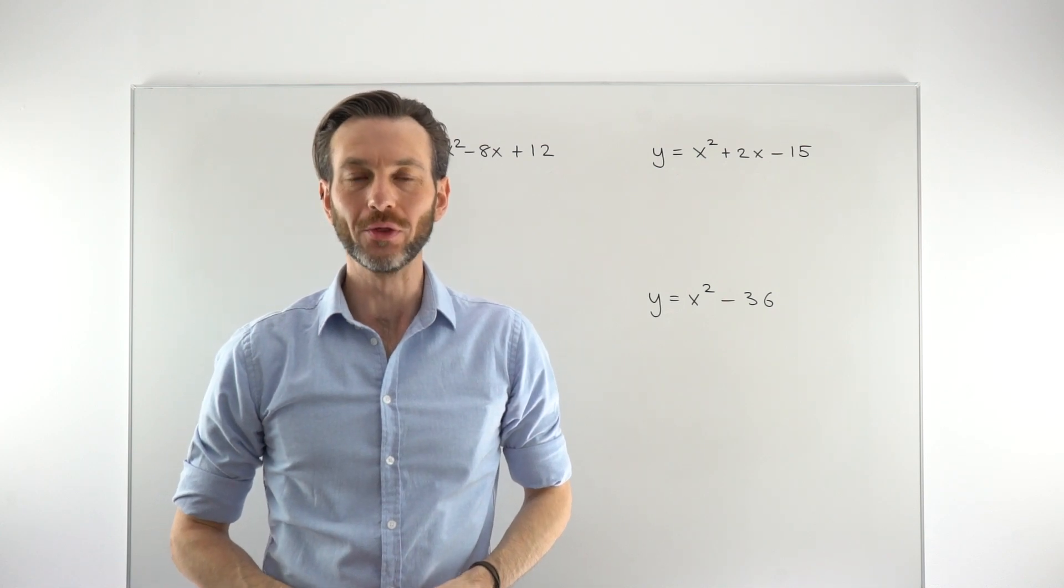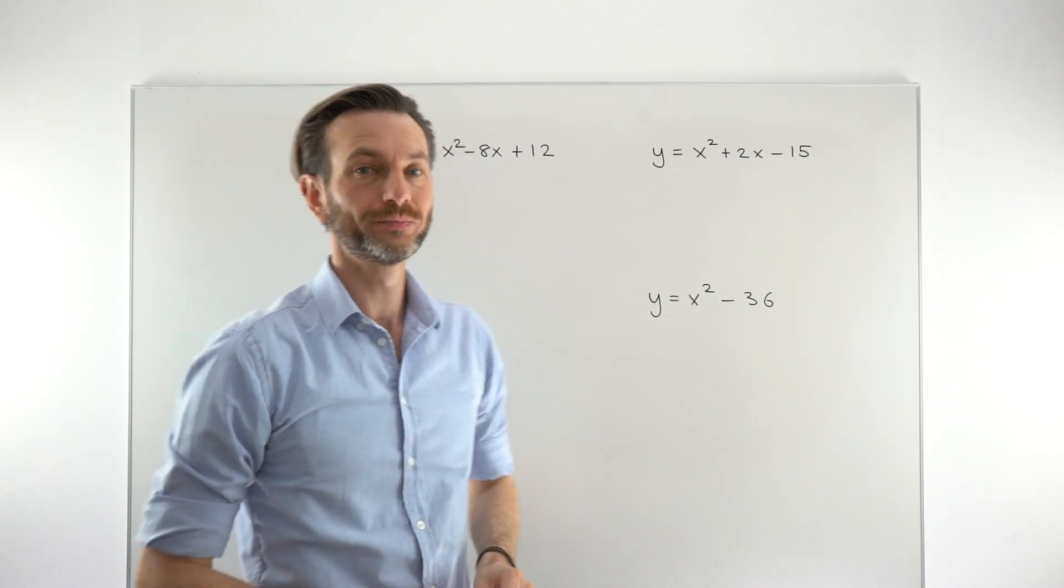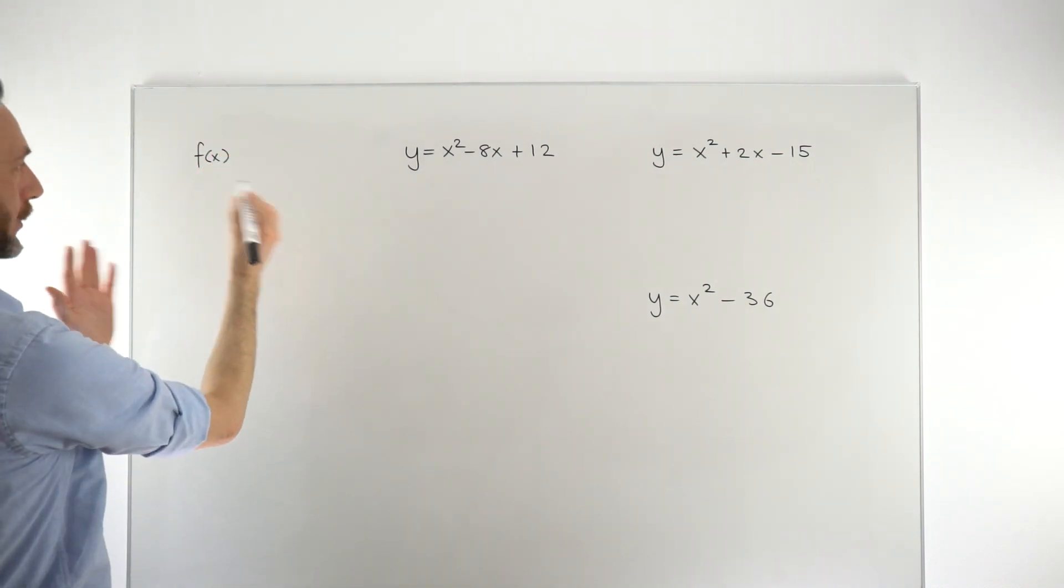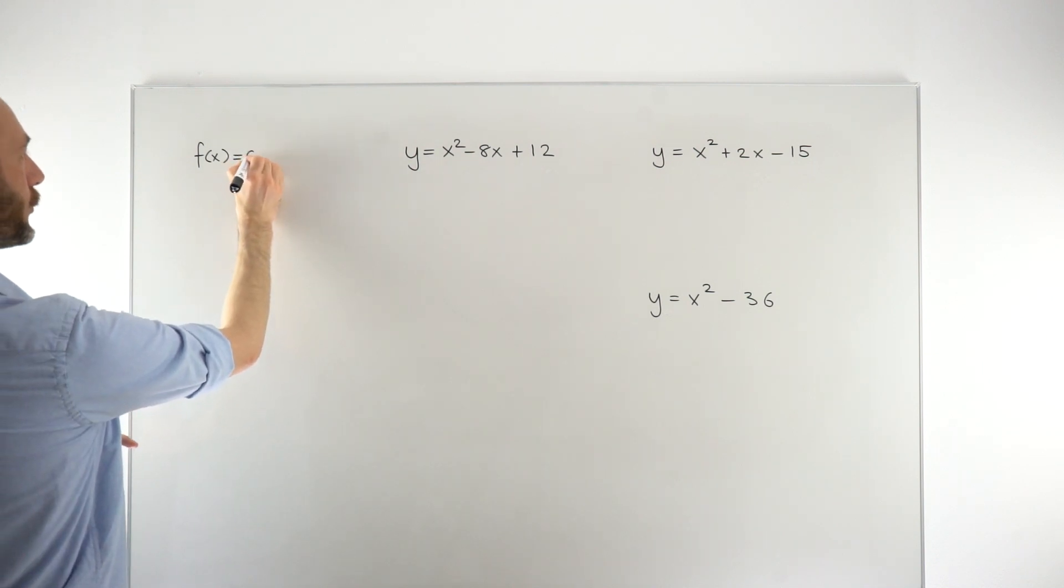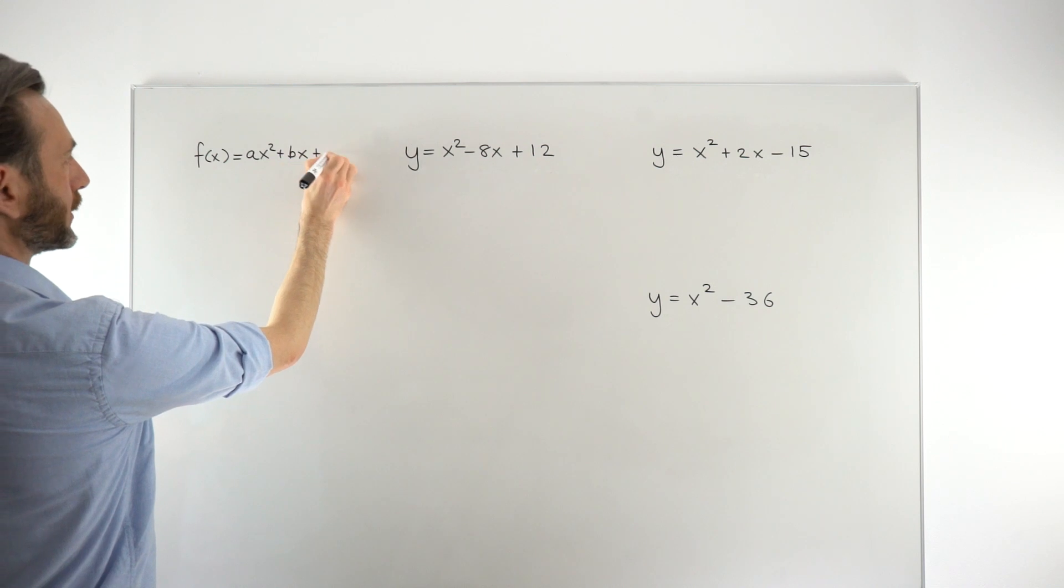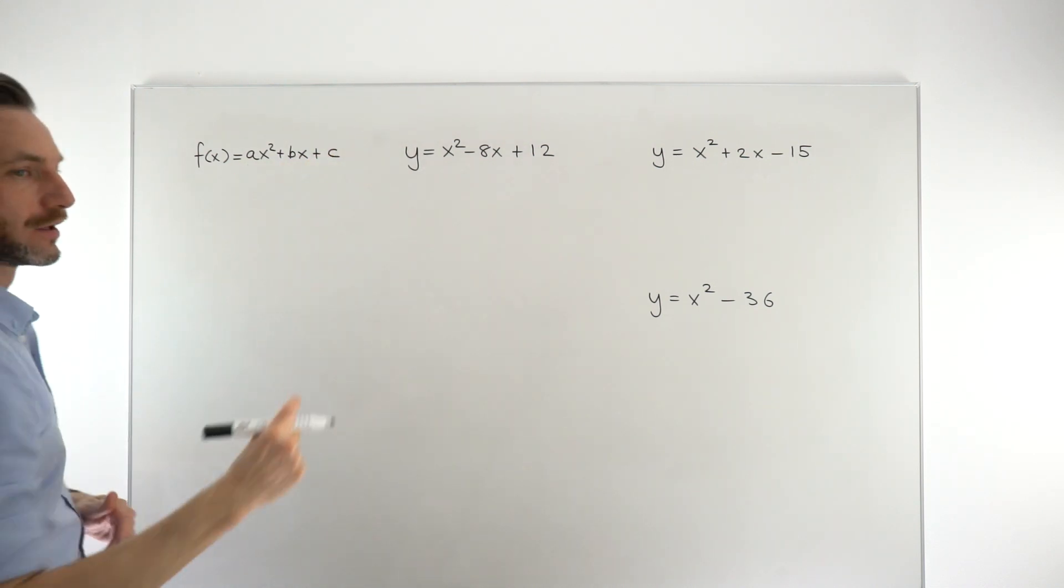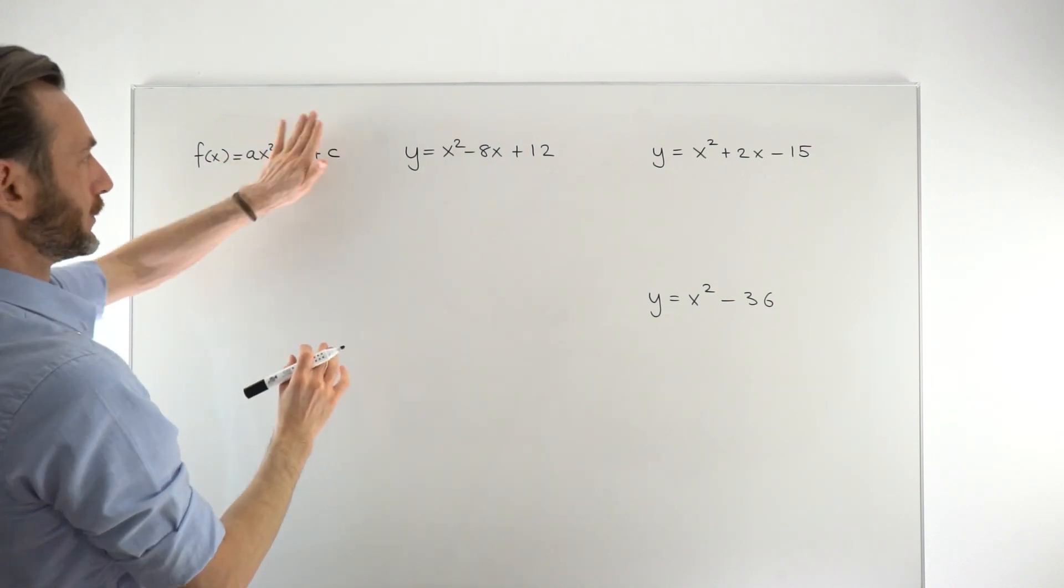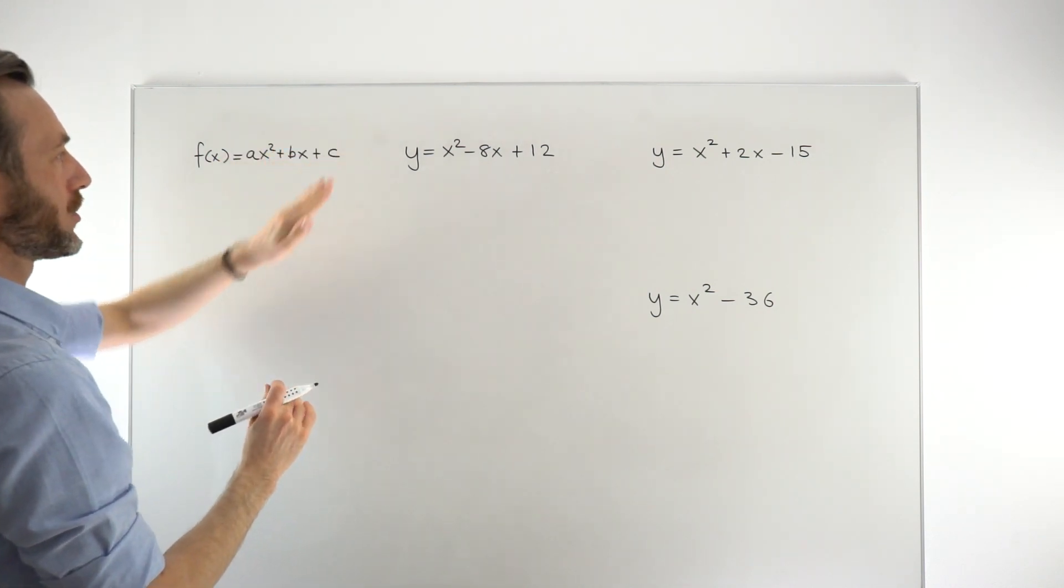In this class, we're going to take a look at the roots of a quadratic function. So as a reminder, a quadratic function is in the form f of x equal to a quadratic expression. And in general, a quadratic expression is ax squared plus bx plus c, where a, b, and c are some numbers. And the b and the c values can be 0, leaving you with just basically an x squared term.